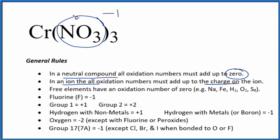We have 3 nitrates, each one is minus 1. Chromium has to be positive 3 for this to all equal zero. So the oxidation state on chromium is plus 3. That's why we call it chromium(III) nitrate.